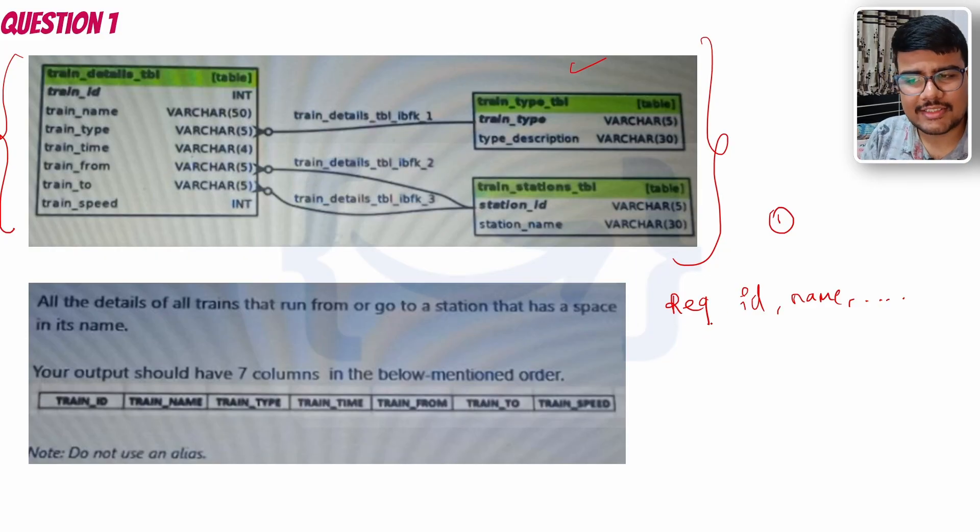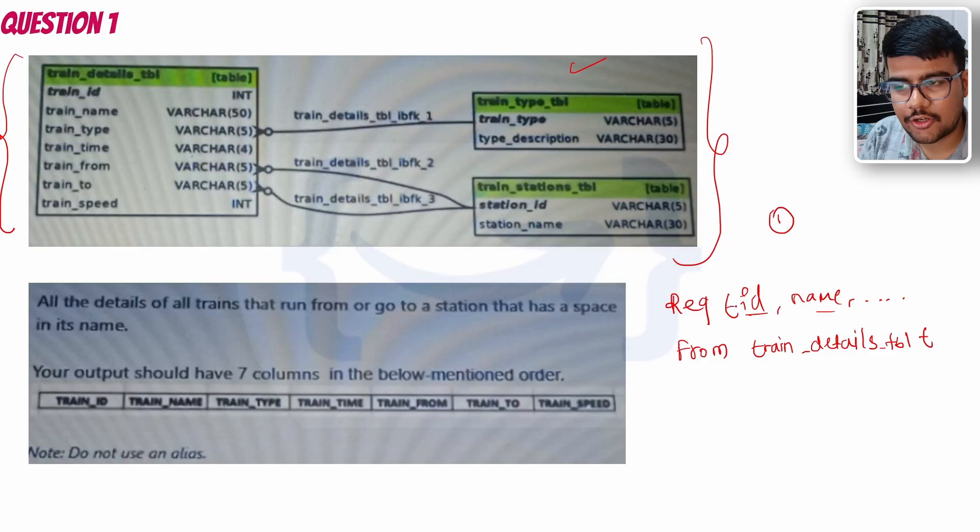Whatever is required, you just need to write id, name, etc., depending upon the question. Then definitely we need to use FROM - otherwise from which table will it take the data, isn't it? Just write the table. Here I can see the table name is train_details_tbl. So you need to have an alias to refer these columns. I will refer it as 't', so I will write t.id, which means from this particular table you need to take id, t.name from this particular table you need to take the name. Similarly, you need to do the same.